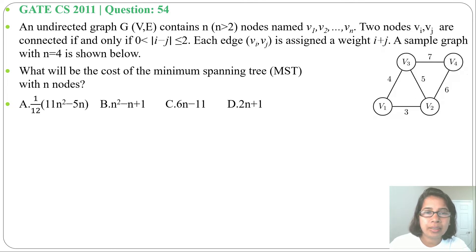An undirected graph G (V,E) contains n (n>2) nodes named V1, V2 up to Vn. Two nodes Vi and Vj are connected if and only if 0 < |i-j| ≤ 2. So that difference should be less than or equal to 2. Each edge (Vi, Vj) is assigned a weight i+j. The sample graph with n=4 is shown below. This is the sample graph.